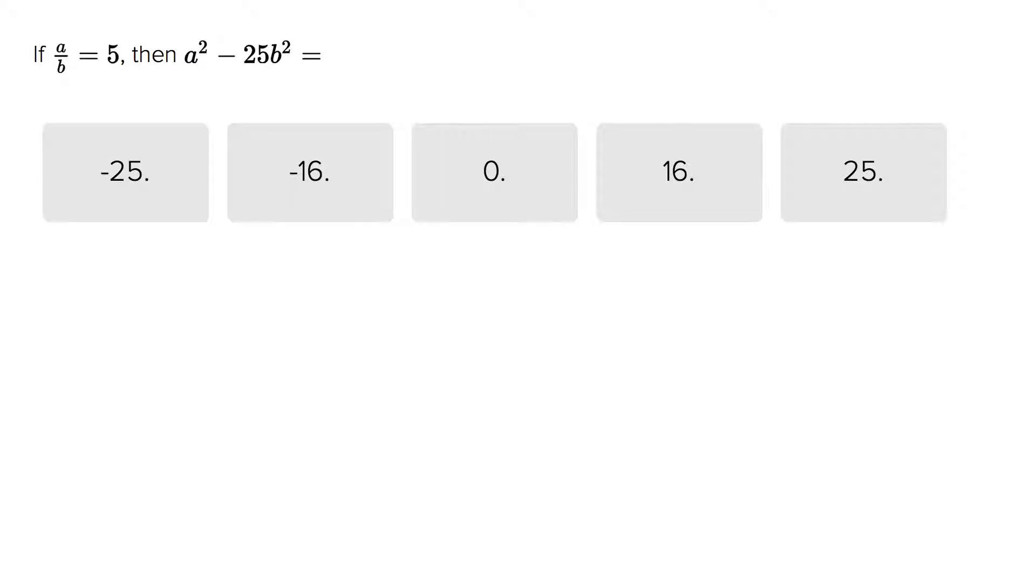This is Tom Rosen. This question is very difficult to solve algebraically, so what we need to do is use the construction of this question against it. It has a weakness. If a over b equals 5, then they ask you to evaluate this expression for a number.